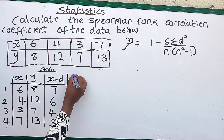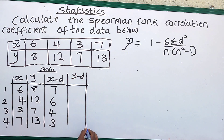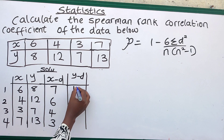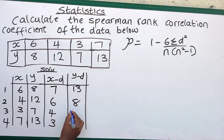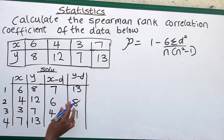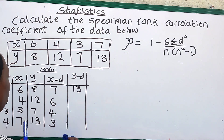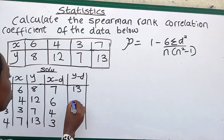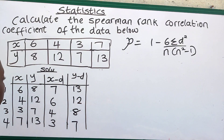Then we arrange Y in descending order as well. Arranging Y in descending order, we have 18 first, then 12, 8, and 7.